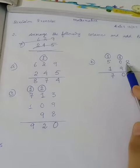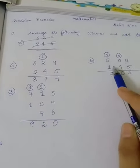3 plus 4 equals 8, 3, 1 is carry over. 1 plus 9 equals 10, and 5 plus 1 equals 6. 6 plus 1 equals 7, 17, 17, 17 plus 3.